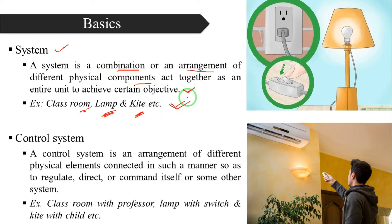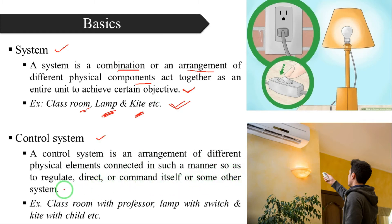Now coming to the control system. A control system is an arrangement of different physical elements connected in such a manner so as to regulate, direct, or command itself or some other system.